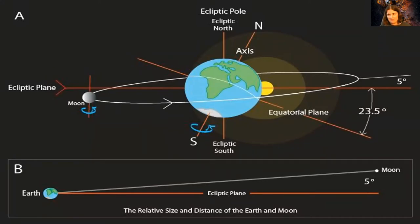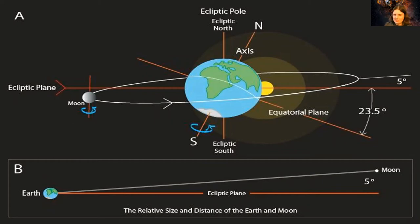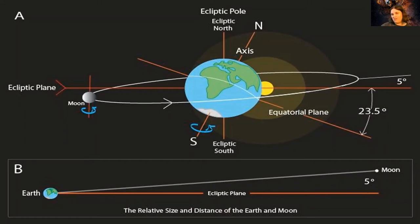So why don't we have an eclipse every month? Because the moon should go behind the Earth for a lunar eclipse, and in front for a solar eclipse, right? Well, it has to do with the tilt of the moon's orbital plane. The moon is tilted five degrees above the equatorial plane — the plane that all the planets orbit on. Because of this five-degree tilt, sometimes the Earth's shadow can cross the moon and sometimes it can't. It's only when the moon's path crosses the ecliptic plane and the sun, Earth, and moon are in alignment that we get an eclipse.